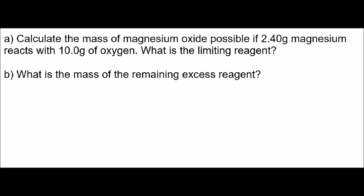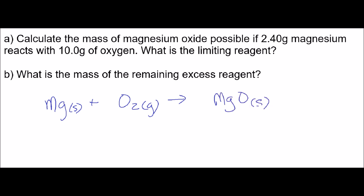First we need to write the equation, then balance it before we can do any stoichiometry. What's going on here is magnesium reacts with oxygen — we've done this in our lab, we've seen this equation a couple times. Magnesium is a metal, it's going to burn with oxygen in the air, which is a gas, and that's going to produce magnesium oxide — that ash-looking thing.